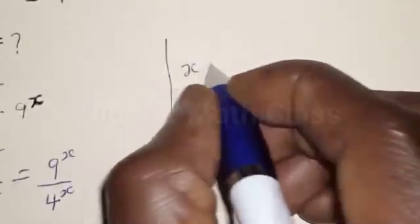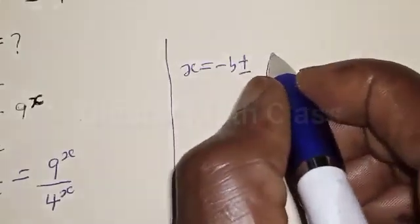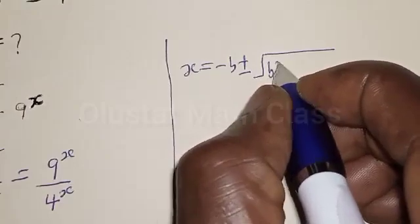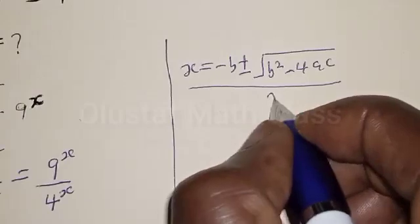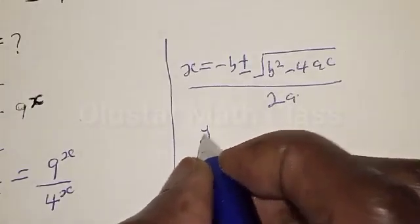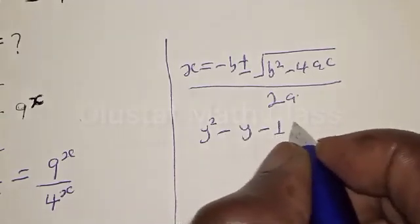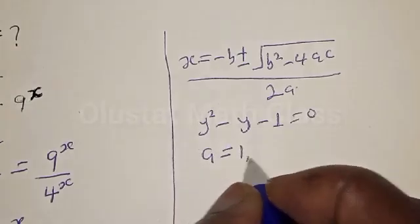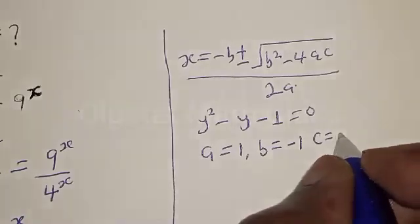We have x equal to negative b plus or minus square root of b squared minus 4ac, all over 2a. From the equation y squared minus y minus 1 equal to 0, we identify a equal to 1, b equal to negative 1, and c equal to negative 1.